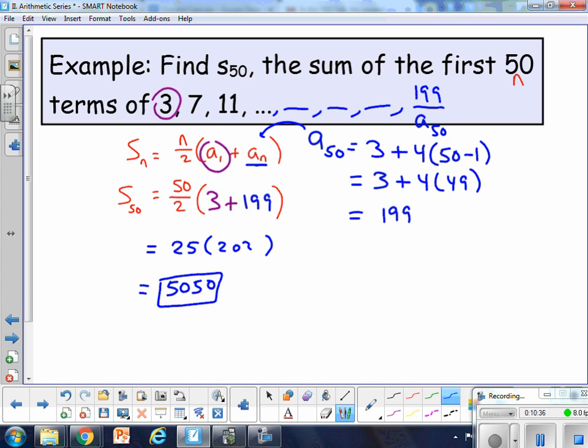And the reason that that formula is working is because we would have all these pairs when you're adding these up, 3 plus 199 is 202. Then 7 plus the term before it would be another 202. 11 plus the term before it would be another 202. And we would basically have 25 pairs of 202s. So that's why we're doing 25 times 202. So that's kind of why it works.